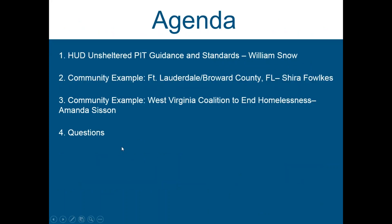We have here today: William Snow from the United States Department of Housing and Urban Development, who will discuss federal government guidance and standards. Second, Shira Foulkes from the Fort Lauderdale, Broward County, Florida Continuum of Care will provide one example of a community's unsheltered count. Third, Amanda Sisson from the West Virginia Coalition to End Homelessness will provide another example. Finally, at the end, we'll have some time for questions and answers.